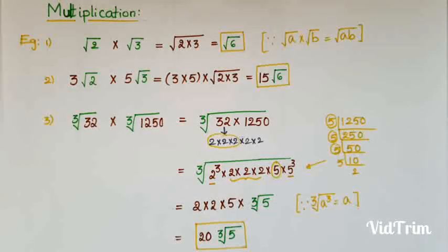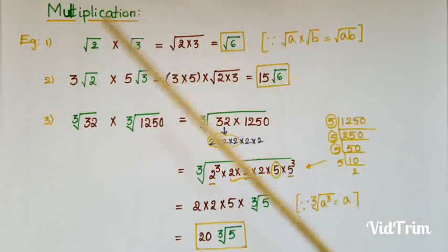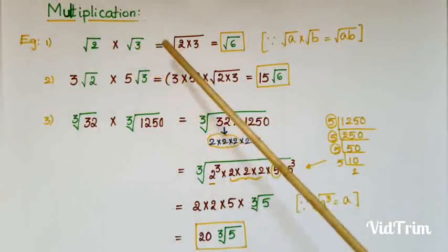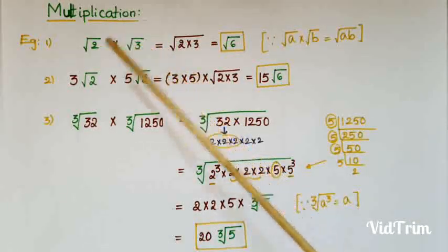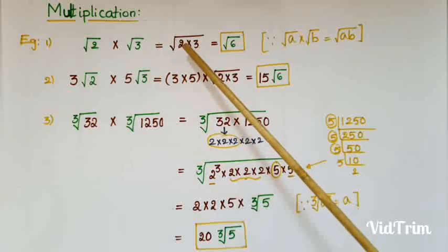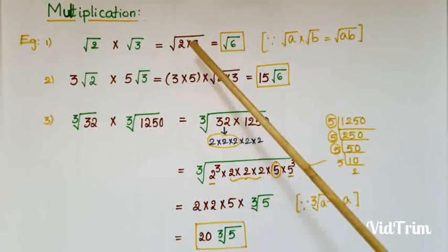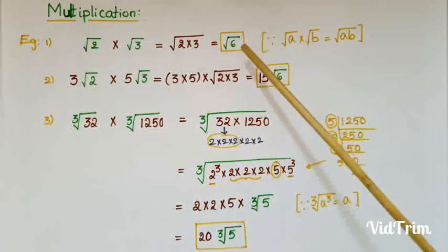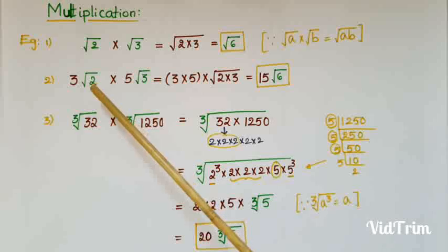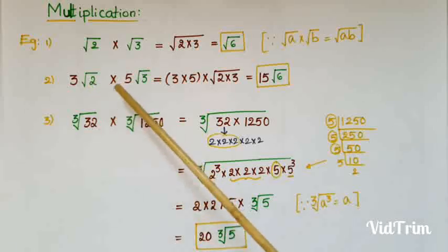Now I am going to explain how to do multiplication of irrational numbers. For example, the first one is √2 × √3. We know that √a × √b = √(ab), so √2 × √3 = √6. The next one is 3√2 × 5√3.